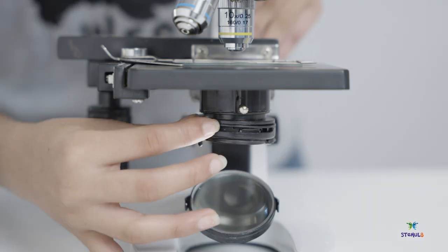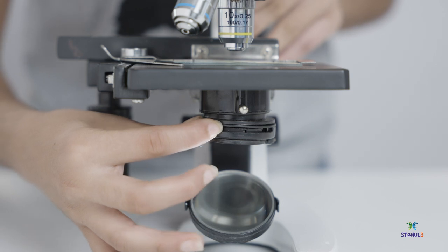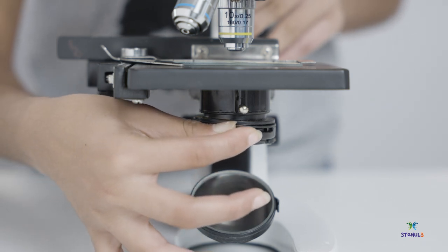Adjust the condenser for maximum amount of light. You can use the diaphragm to decrease the illumination.